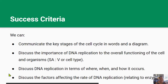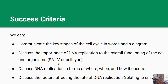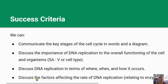You've reached the end of the video. Well done. By now you should be able to communicate the key stages of the cell cycle, discuss the importance of DNA replication to the overall functioning of the cell in terms of surface area to volume ratio or the type of cell, discuss DNA replication in terms of where, when, and how it happens, and discuss the factors affecting the rate of DNA replication relating this to enzymes. Thanks for watching and I'll see you in the next video.